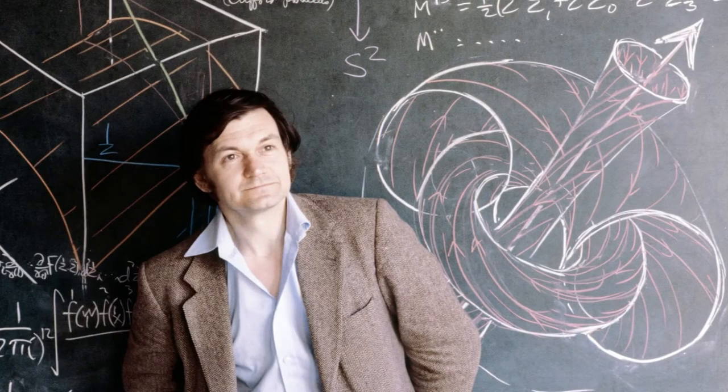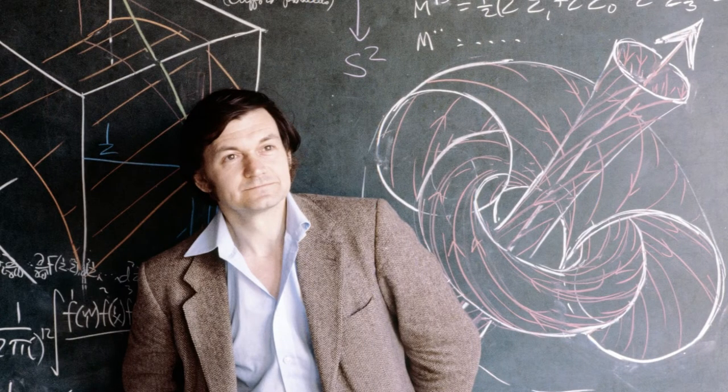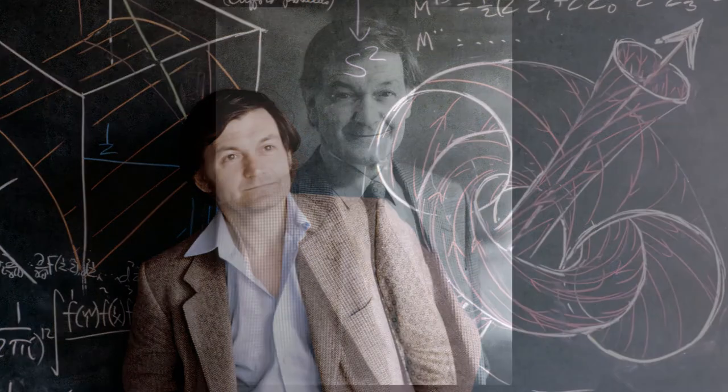In 1964, Penrose showed that black holes could indeed form and he worked out the nature of the surface of such an object. To him, the black hole problem was a problem in geometry.